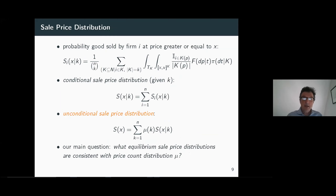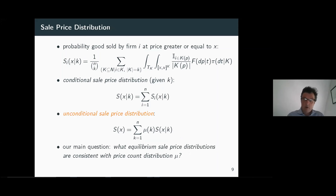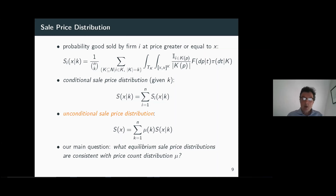The object we keep track of is the sale price distribution — the distribution at which an individual firm i makes a sale given that there are k firms quoted, or the unconditional distribution averaging over all firms and all possible numbers of quotes. The main question of the paper is: what equilibrium sale price distributions are consistent with the given distribution of the price count?